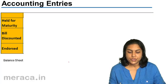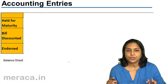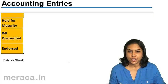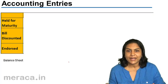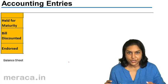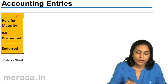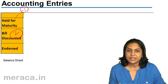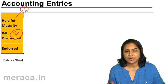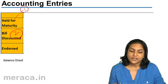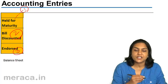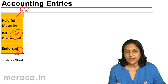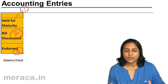Now, accounting entries. When a bill is received, we have three options. First, we may hold the bill till maturity — if payment is to be made after three months, we keep the bill with us till maturity. Second, we get the bill discounted with the bank. We need money immediately; the bank deducts a bit of discount and gives us the balance. Or thirdly, a bill may be endorsed or transferred to a third person. These are the three transactions we may conduct with a bill of exchange.